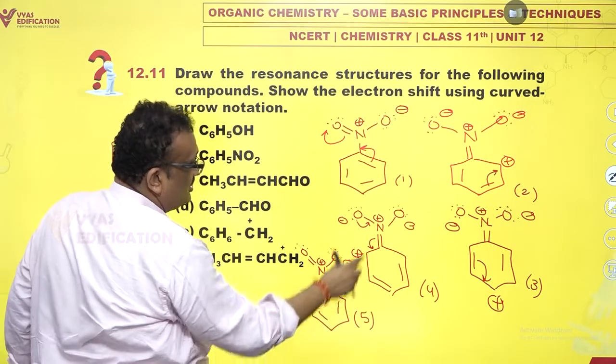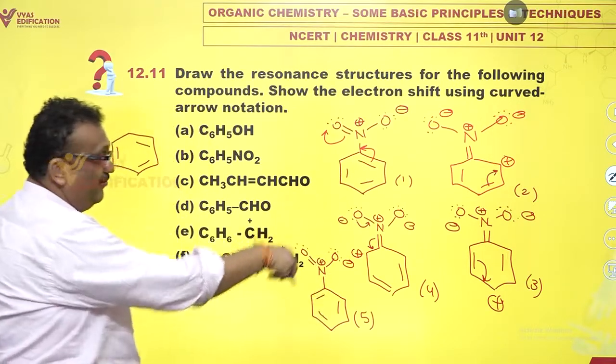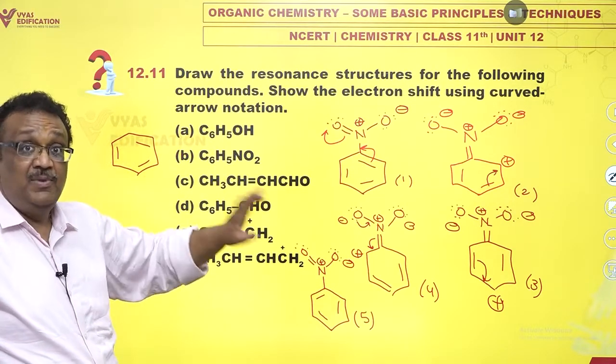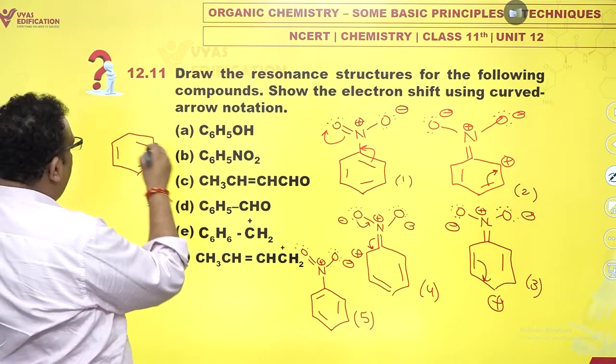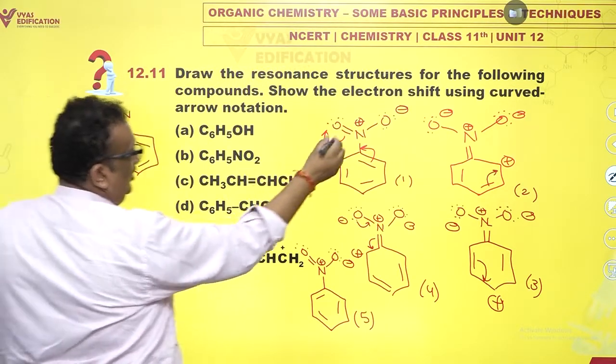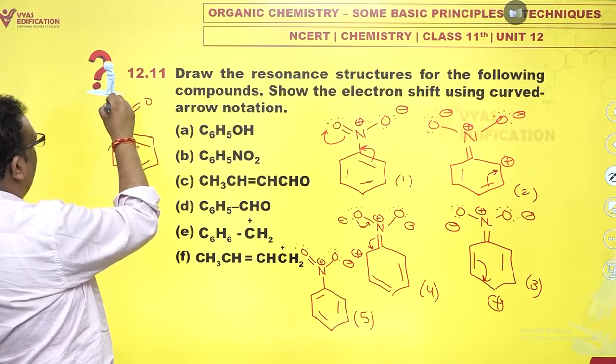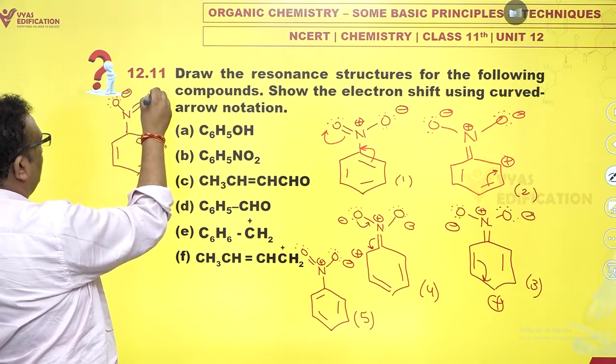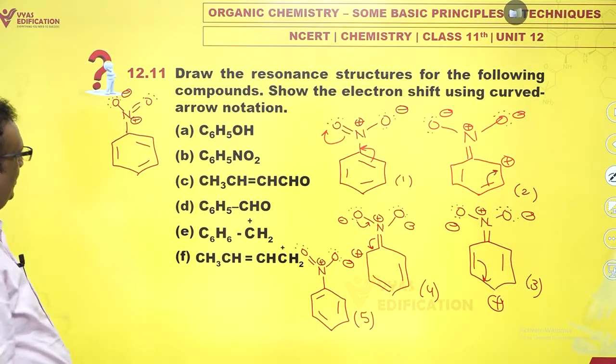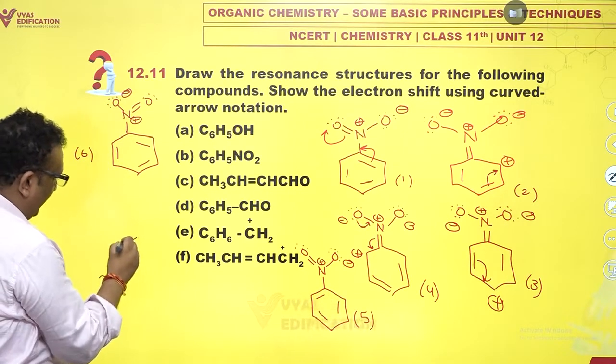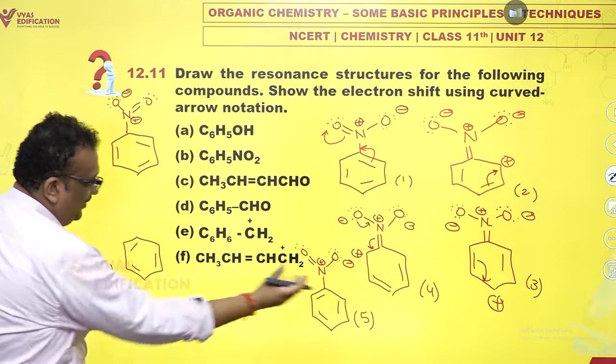But in one and five, do you see that internally also a delocalization is possible? What does that mean? I'll just show you here. I don't have space, so I'm writing here. I'm just copying one as it is. Please note one and five are not same. Double here, single here. Benzene ring has rotated in one and five. One and five are not same. They have same energy but the structures are different.